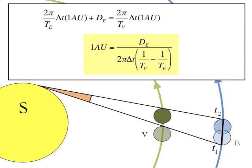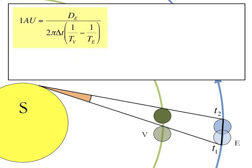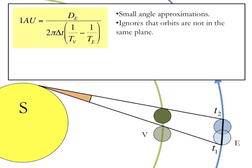And what I've just presented is a simplification that makes some other assumptions. Firstly, it makes the assumption of a small angle, it ignores that orbits are not in the same plane, and it assumes that there are antipodes. If we add all those in, the equation gets a lot more complicated.